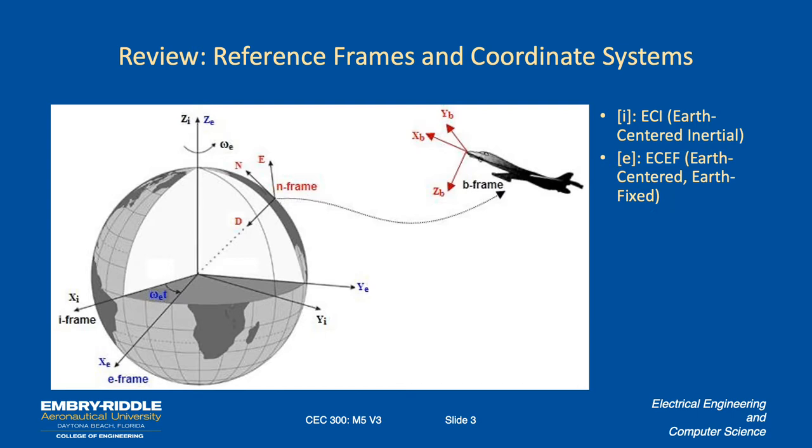The Earth-centered Earth-fixed reference frame rotates relative to the inertial frame at a rate omega sub e. It also has an x-axis which goes through the prime meridian at the intersection with the equator. The z-axis is the rotation axis of the Earth, and the y-axis is chosen to be a right coordinate system. The northeast down reference frame is a tangent frame to the surface of the Earth, where the x-axis is north, the y-axis is east, and the z-axis is down.